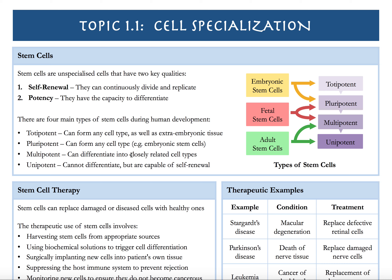Multipotent stem cells can go into closely related cell types. For example, a multipotent blood cell can become different types of white blood cells and red blood cells. And then we have unipotent — they cannot differentiate, but they can self-renew. Looking at this diagram, embryonic stem cells are totipotent and pluripotent.